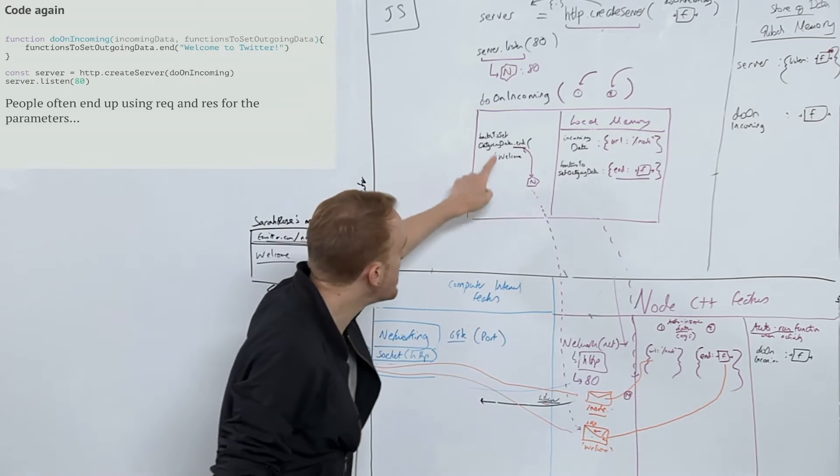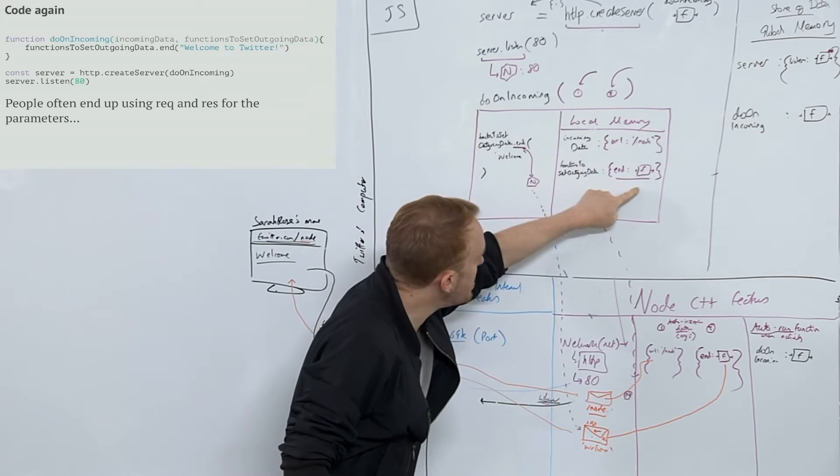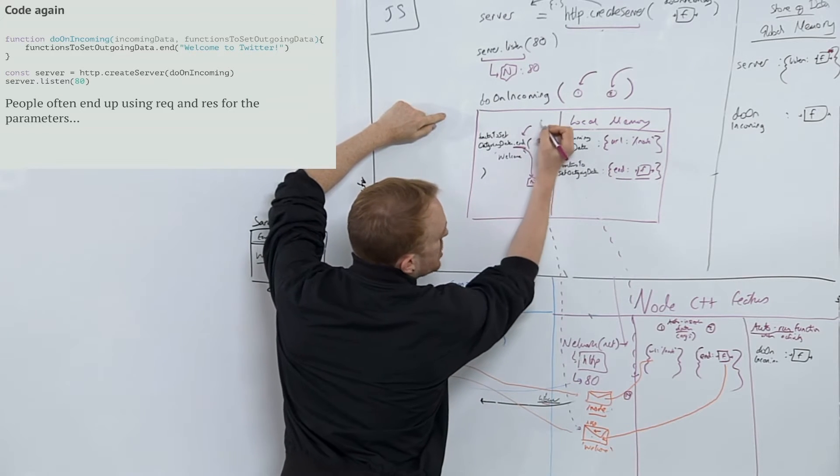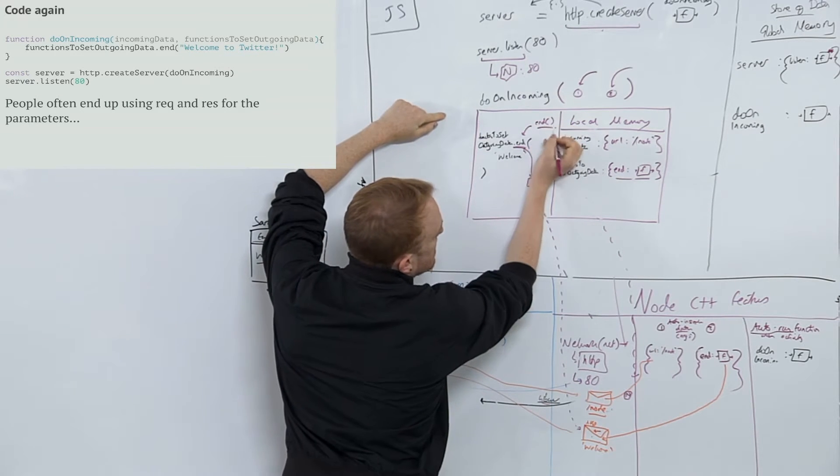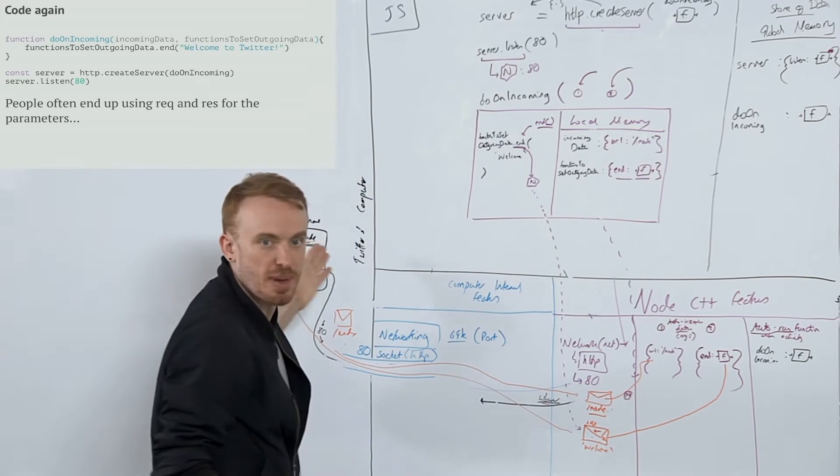So that we had access to the incoming data from the incoming message and access to the outgoing message to add data to it, the tweets, or in this case a very boring message, welcome to Twitter, via the object that gets passed in which has a bunch of functions that when run, here we are executing end, executing the end function, is going to give us back access to this message here and send that message back.